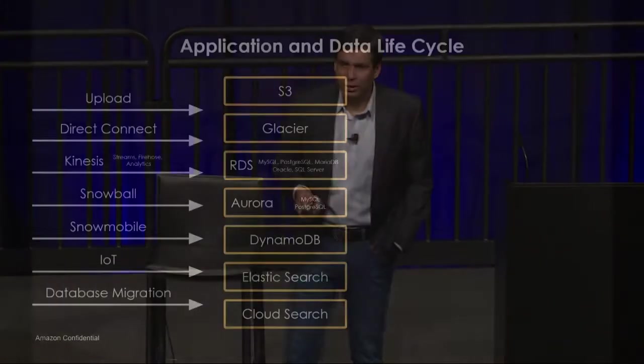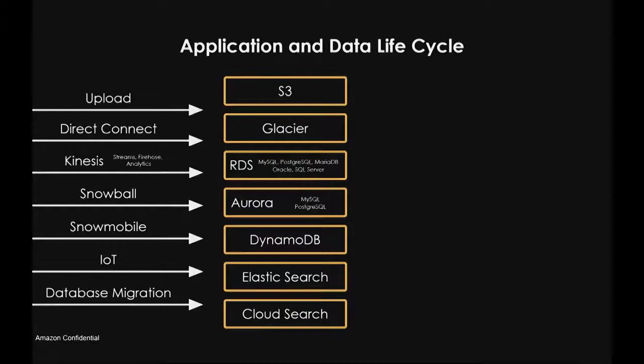Look at the breadth and depth of services AWS has for bringing data in. I really like Snowball — how many of you have heard of it? Snowball is a very rugged appliance that AWS ships to your business so you can connect it to your high-bandwidth network, move a lot of data in, and ship it back. It has a shipping label and it just magically shows up wherever you want. Moving massive amounts of data from data centers, remote locations, or field agents that aren't well-connected is easy because of this breadth of AWS services.